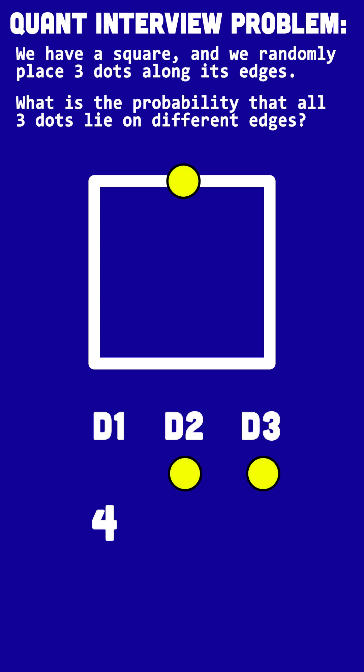Dot two, since I've used one of the edges, i.e. the top edge, I can place my dot two on three different edges. So three possibilities. Let's say I put it on the right edge.